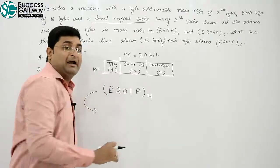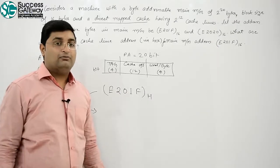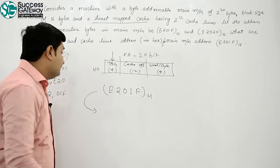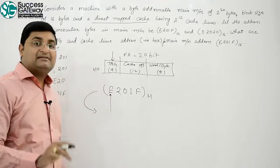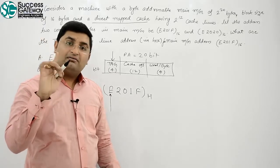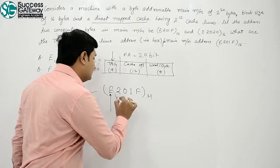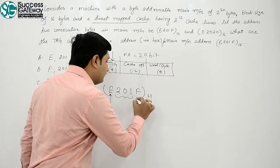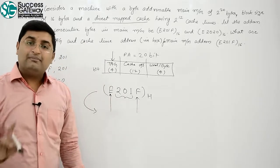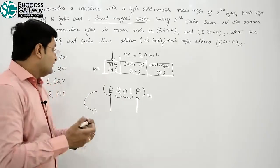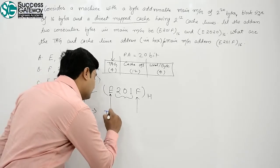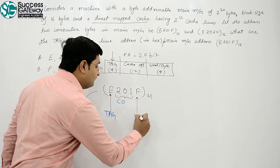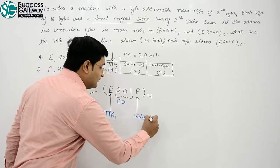Now, interesting part. Min kyun binary me break nahi kar raha ho? Iska benefit yeh hai. Tag bits kitni hai? 4. 4 matlab hexadecimal ka one alphabet. 12 matlab hexadecimal ka three alphabet. And word offset 4 matlab hexadecimal ka eight bit. Now, abh dhyan dekhna. Dhyan se dekhou. It is a tag, it is a cache offset, and it is a word or byte offset. Clear hai?